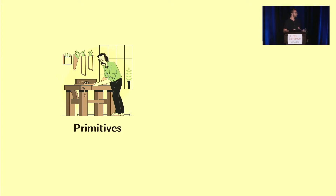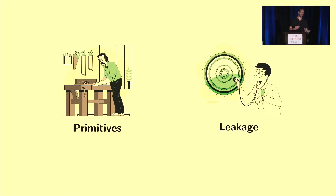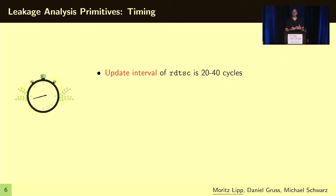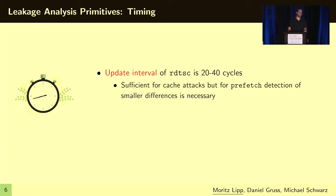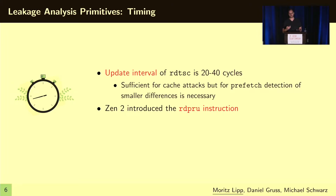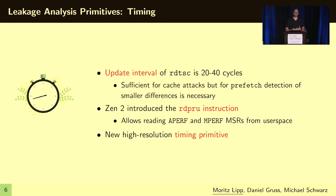In order to investigate the leakage, we need primitives that allow us to observe what is happening inside the CPU. On the one hand, we need a high-resolution timer. The update interval of the unprivileged RDTSC instruction is typically around 20 to 40 cycles on AMD microarchitectures. While this is sufficient for cache attacks, in order to observe smaller differences, we need a different timing primitive. With the Zen 2 microarchitecture, the RDPRU instruction has been introduced, giving us unprivileged access from user space to the APERF and MPERF MSRs — a new high-resolution timing primitive we can use on modern AMD microarchitectures.